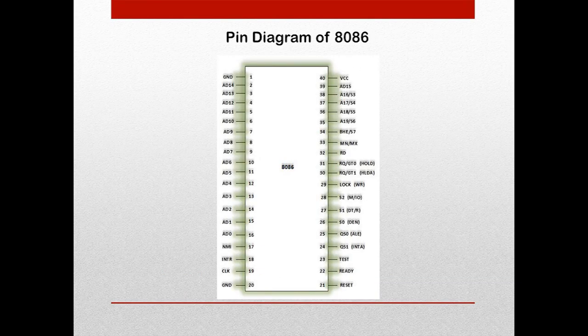The 8086 is a 40-pin IC package. There are two modes of operation: minimum mode and maximum mode. In minimum mode, it is a single processor system and all control signals for I/O or memory are generated on its own. In maximum mode, additional co-processors can be connected, used for complex or large operations. The level of pin 33 — minimum or maximum — decides the operating mode. Pins 24 to 31 issue two different sets of signals, one for each mode.